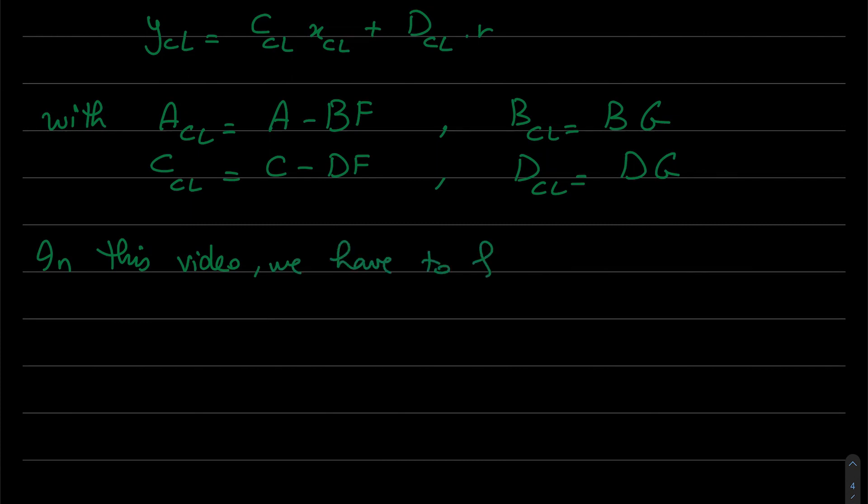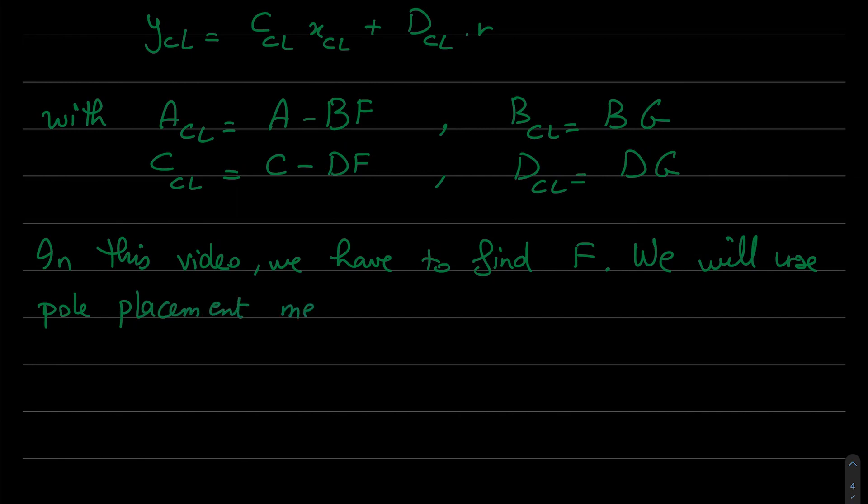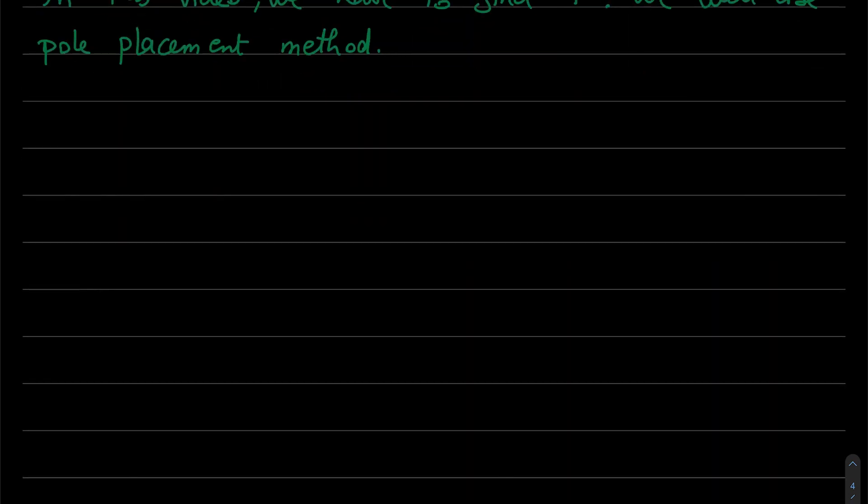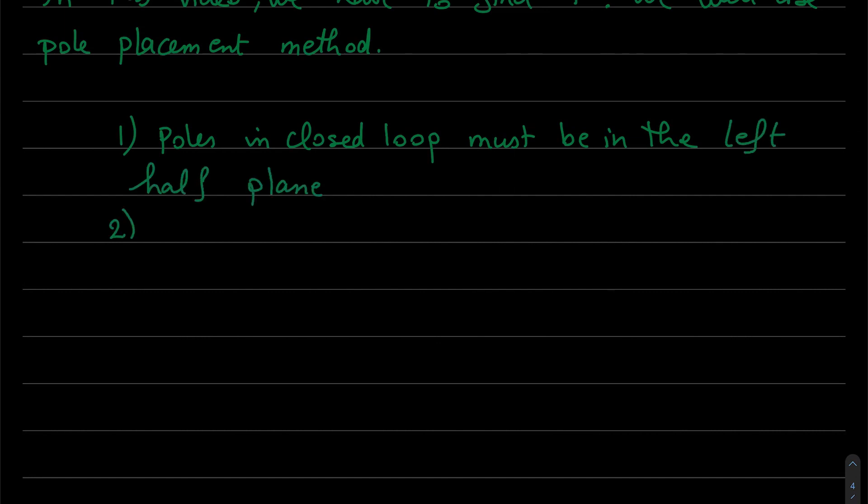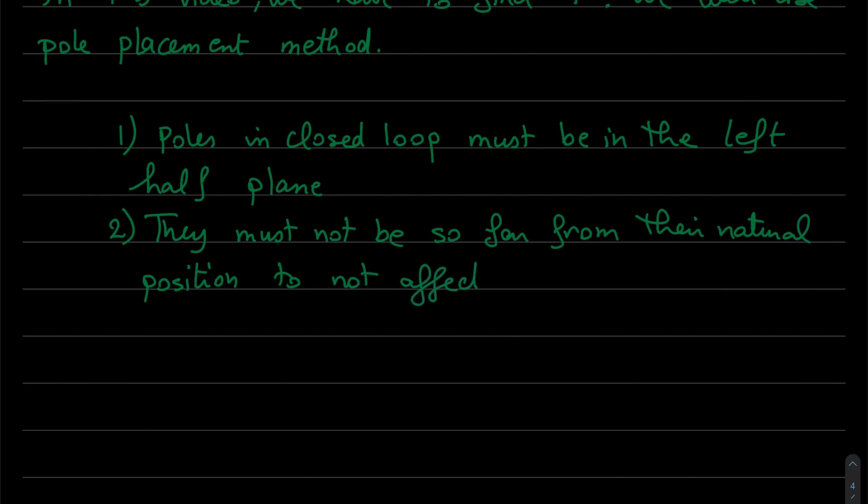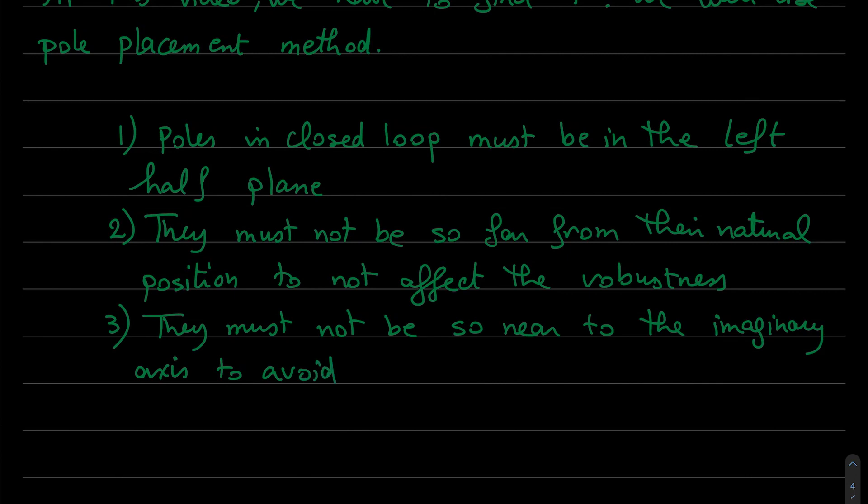In this video, we have to find f, so we'll use pole placement method. The poles are chosen in closed loop, they must be in the left half plane so to be stable, they must not be so far from their natural position so do not affect the robustness of the control, and they must not be near to the imaginary axis so to avoid oscillations.